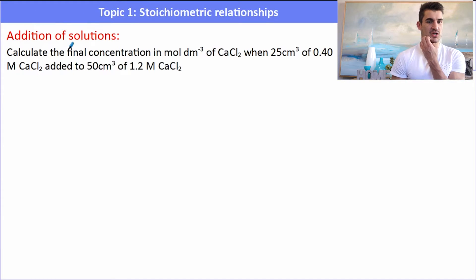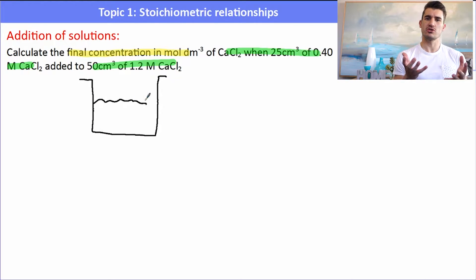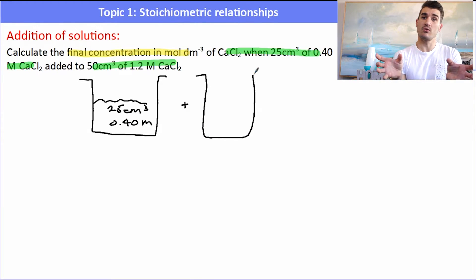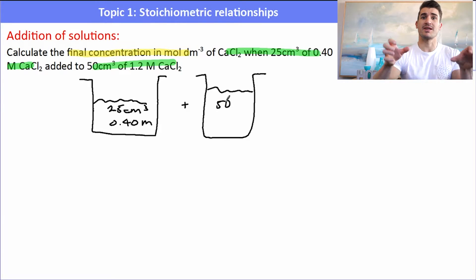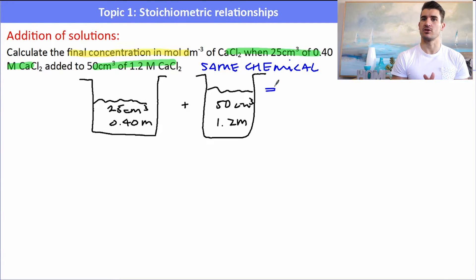Now an example where we have an addition of solutions. Calculate the final concentration in mol dm⁻³ of CaCl₂ when 25 cm³ of 0.4 molar CaCl₂ is added to 50 cm³ of 1.2 molar CaCl₂. Imagine two beakers: one with the first concentration and volume, and one with the second. We're simply going to pour them together to make one solution. They're both the same solution so there's no reaction — you're just adding them together. There's no cancelling out because it's the same chemical.